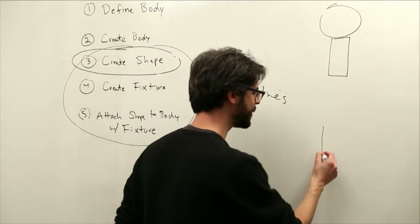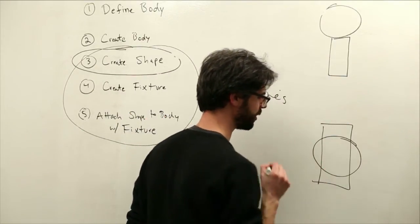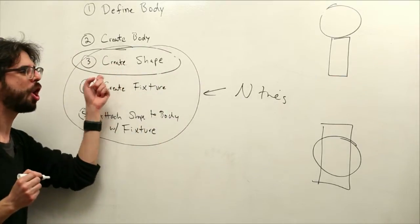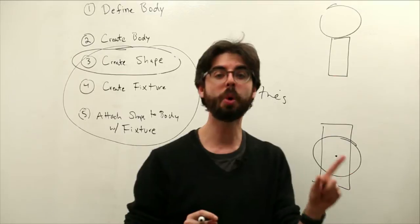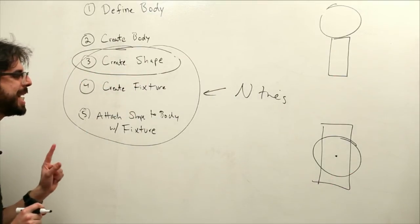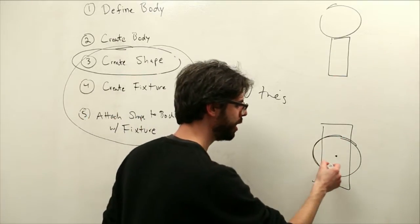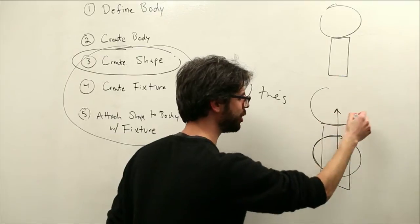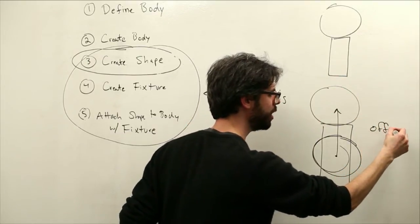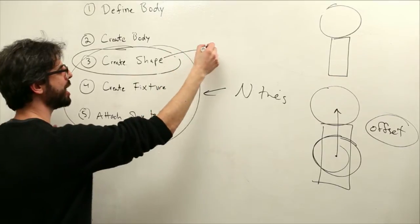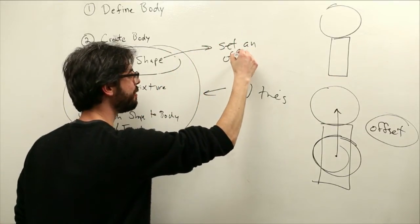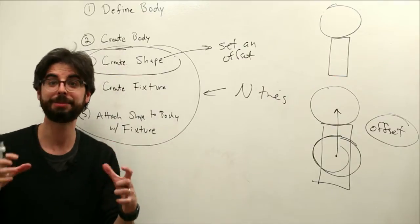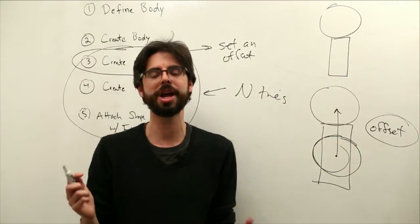Now, if we just went ahead and did that without thinking it through, what we might end up getting is a shape that looks like this. Because these shapes are always attached in a way to the center of the body. And one of the things in the example that you're going to see is that the circle is given an offset location along the y-axis. So one of the additions we're going to have to do here when we create the shape is set an offset.